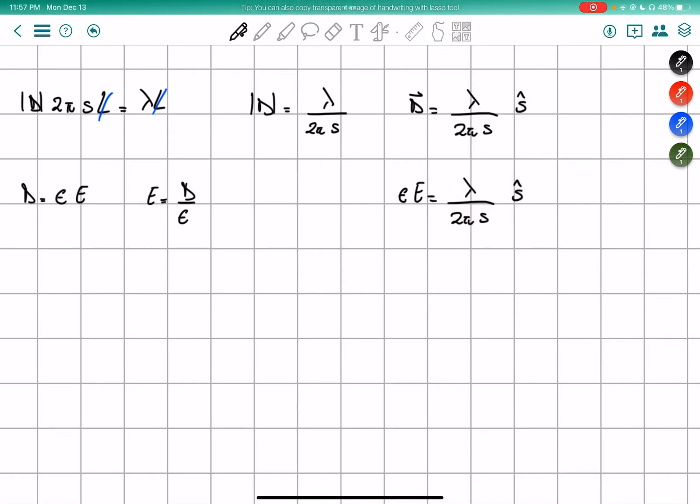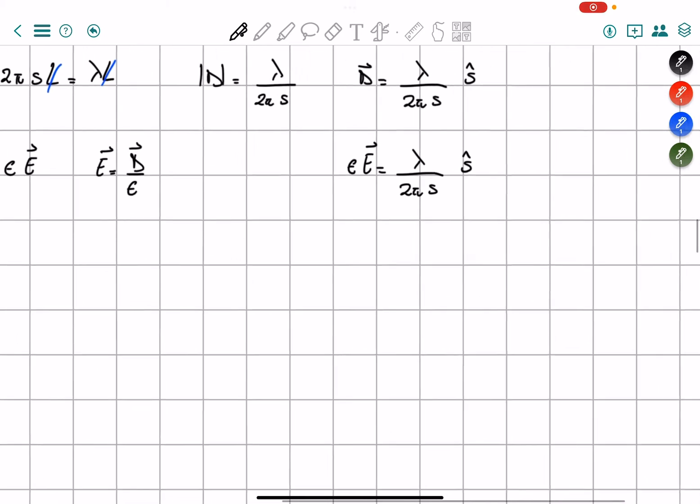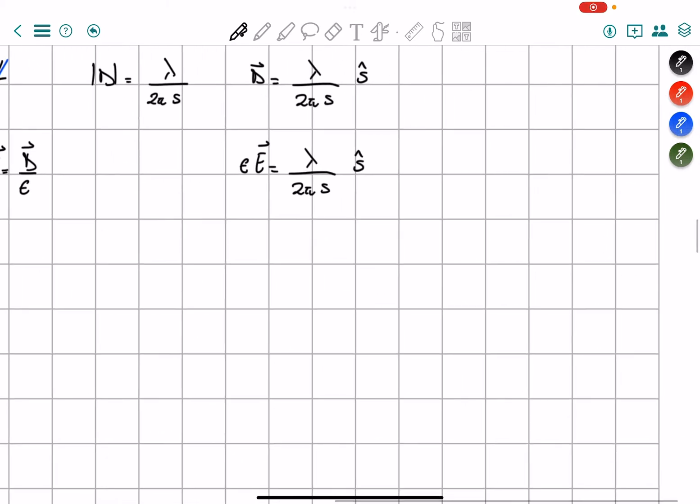And we're talking about a vector, so it's going to be like this. And so we divide both sides by the epsilon. So electric field vector is going to be equals to lambda over 2 pi epsilon times 1 over S in the S hat direction.